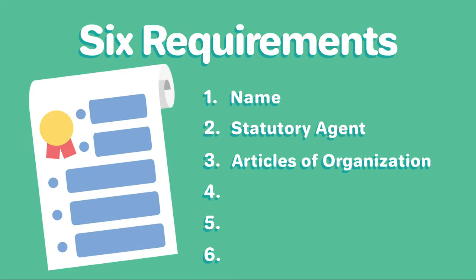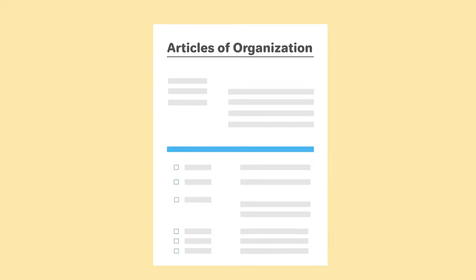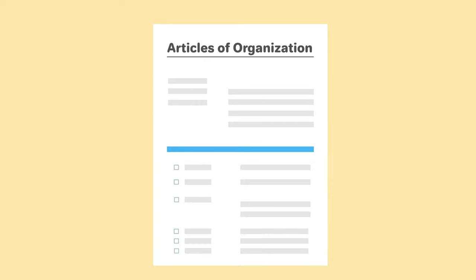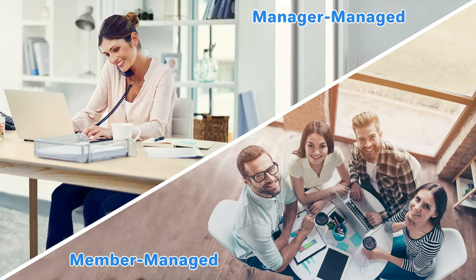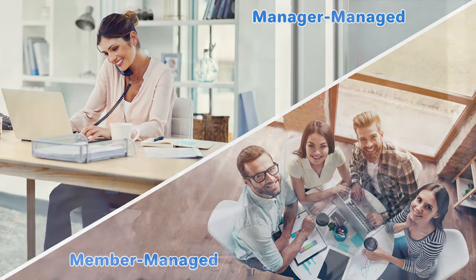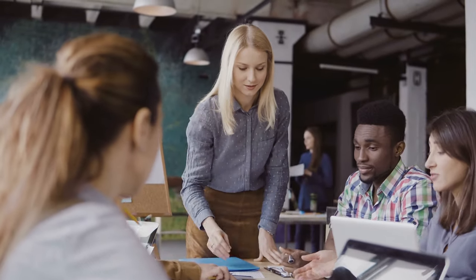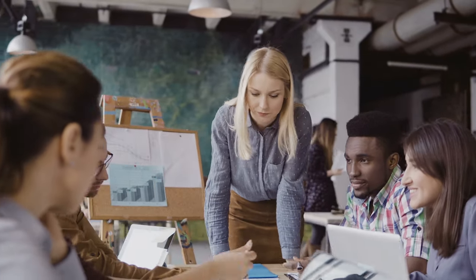3. File the Articles of Organization. To register your New York LLC, you will need to file the Articles of Organization with the State of New York. This can be done online or by mail. You will need to state whether your LLC will be member-managed or manager-managed. Member-managed means all members of the LLC manage the company, which is good for small organizations where everyone is involved in the day-to-day operations.